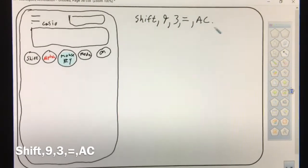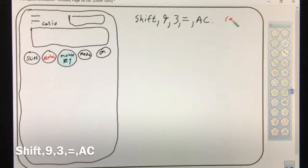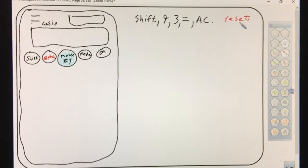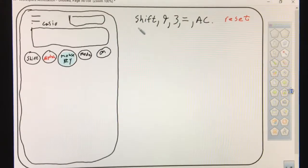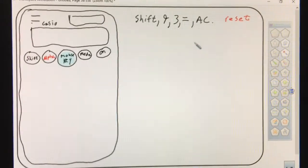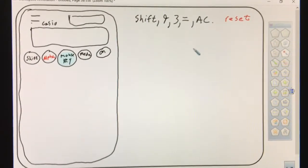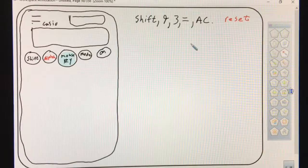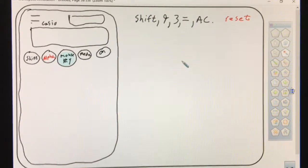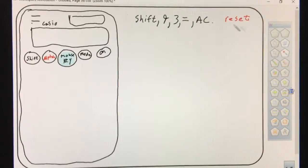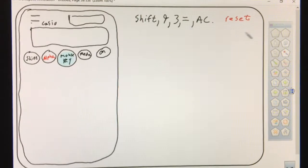What that does is configure and reset the calculator. If somebody had it in some weird mode, doing statistics, scientific notation, or radian mode, going through this process will save a lot of time figuring out what's wrong. Unlike a cell phone, turning the calculator off doesn't fix it - it stays in the same mode. So hit shift, nine, three, equals, AC to reset.